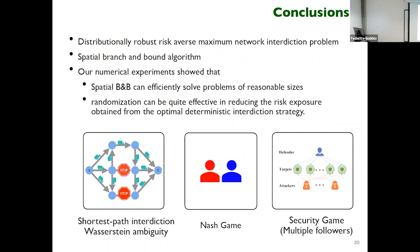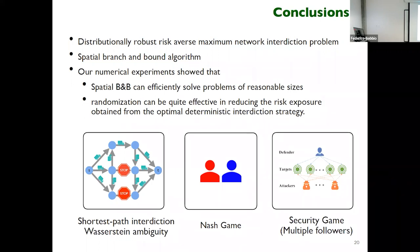To conclude, we considered a distributionally robust risk-averse network interdiction problem. We designed a spatial branch-and-bound algorithm that can efficiently solve problems of reasonable sizes. Randomization can be quite effective in reducing the risk exposure compared to the optimal deterministic interdiction strategy. Future directions include a shortest path network interdiction problem with continuous ambiguity sets such as the Wasserstein ambiguity set, a Nash game where both agents use CVaR and are ambiguity-averse, and a security game with multiple followers and a single leader. Thank you very much for your attention.